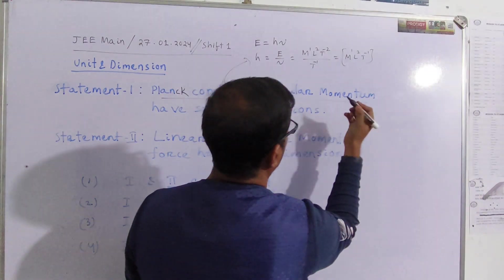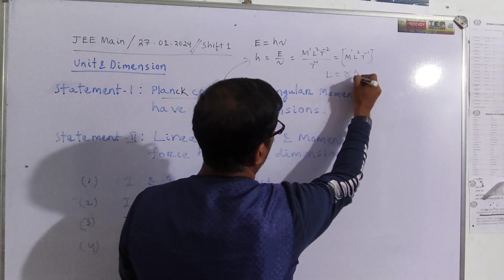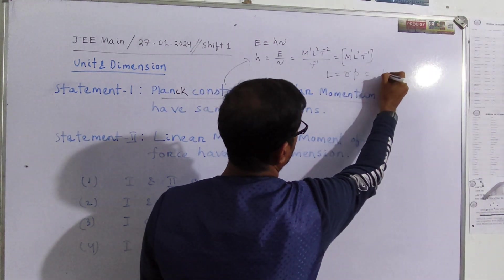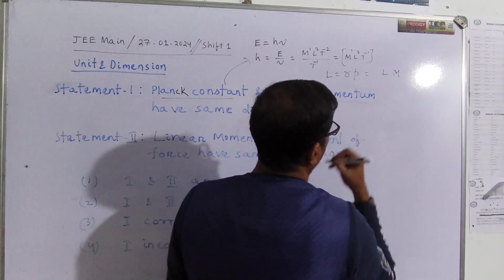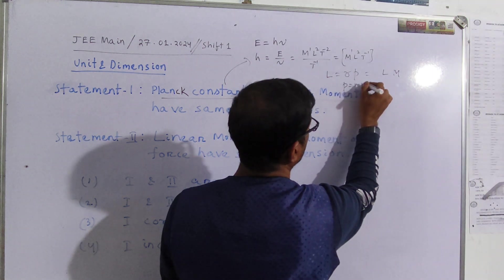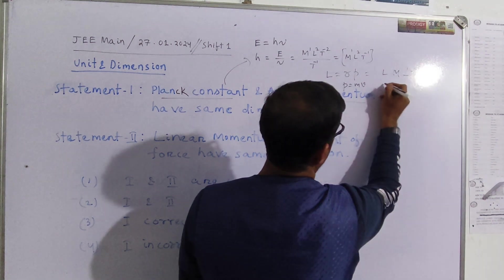Now what is the dimensional formula of angular momentum? L is equal to R cross P. So let us say R P. R is your distance, distance is L. P is mass into velocity, so for mass I can take M, and for velocity, P is mass into velocity, so for velocity I can take L1 T minus 1.